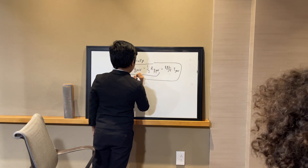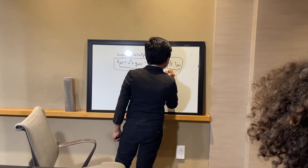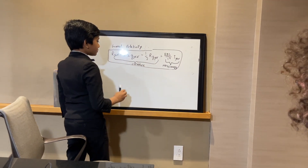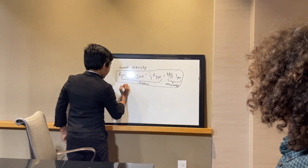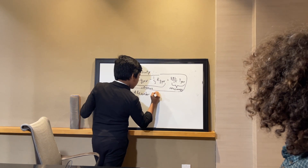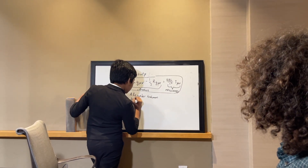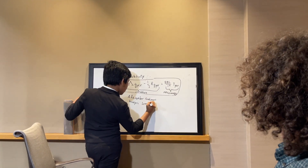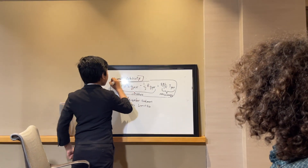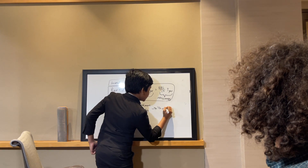It basically tells you how curvature affects the distribution of mass and energy. And so, general relativity has also been used by multiple scientists, most notably Alexander Friedmann, and Georges Lemaître — I'm not sure how to pronounce that. These two scientists used the theory of general relativity in order to deduce that the universe was expanding.